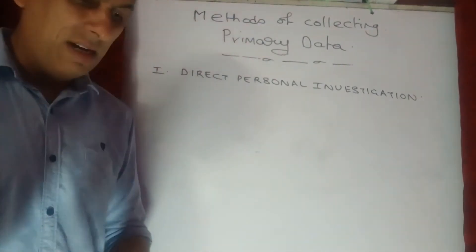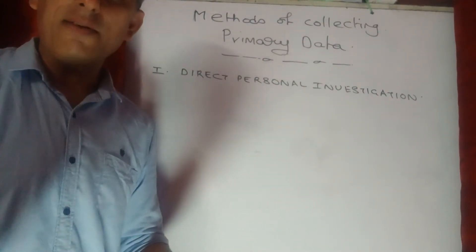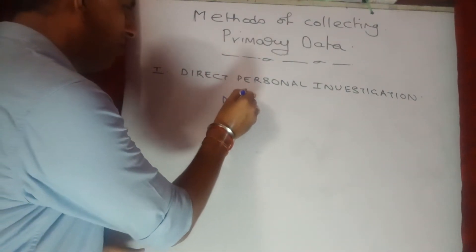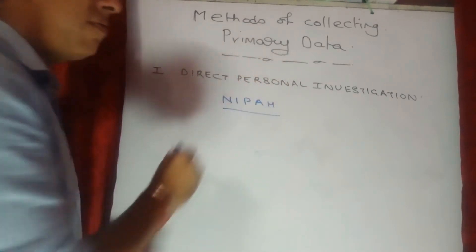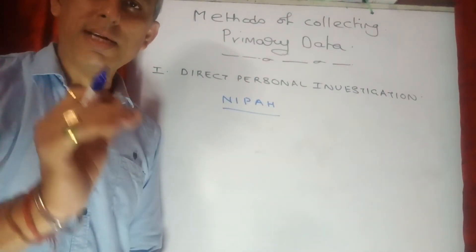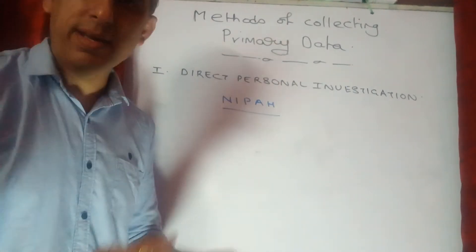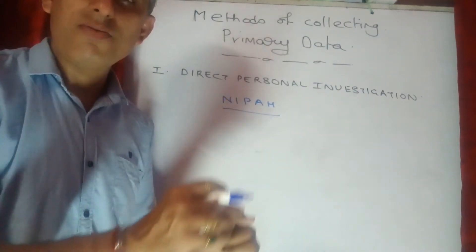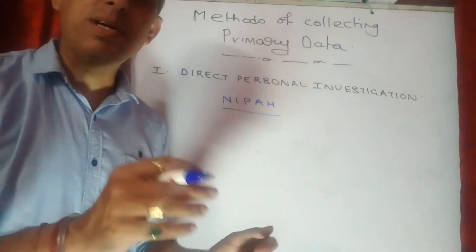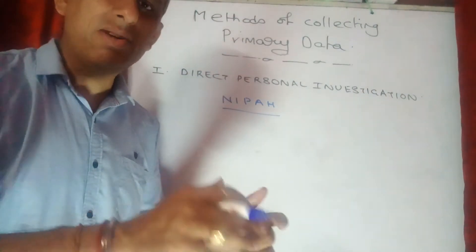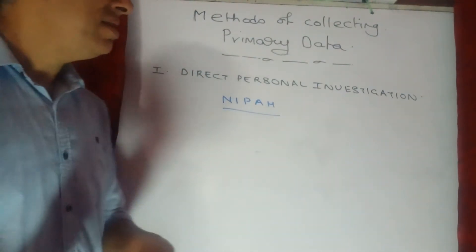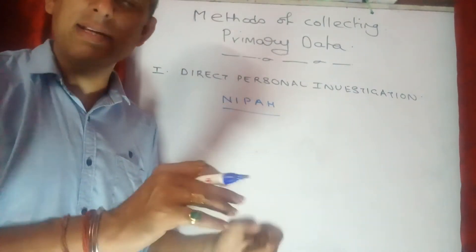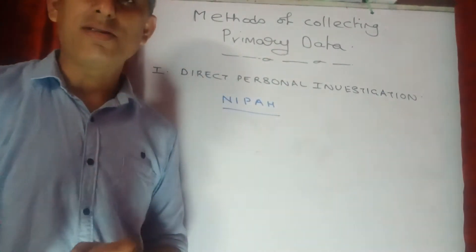To understand this better, consider the example of the Nipah virus. A few years back in Kerala, this virus came into prominence and affected quite a few households in certain cities and villages. Unlike COVID-19, the Nipah virus has a far higher fatality rate — meaning more people infected died from it — making it a very dangerous virus.